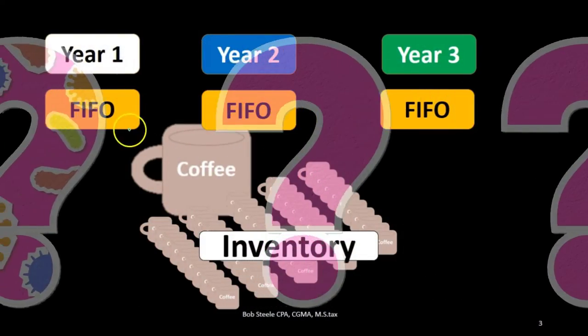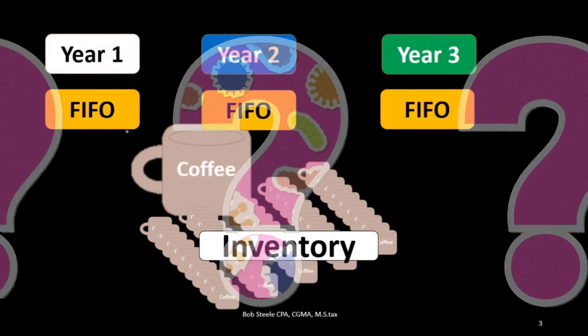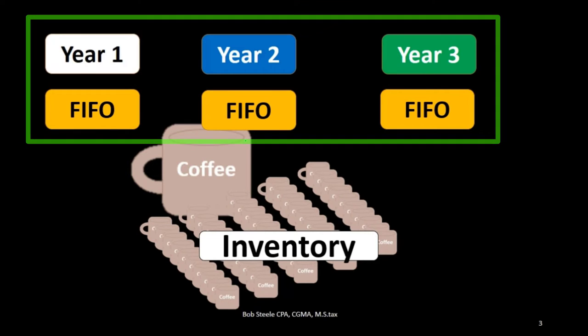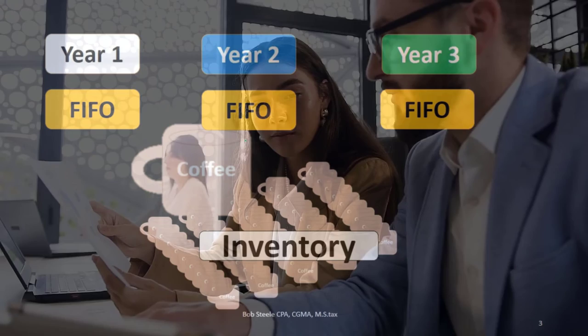Why? Because if we had first in, first out in year 1 and switch to last in, first out, it's going to cause timing differences within the income statement.